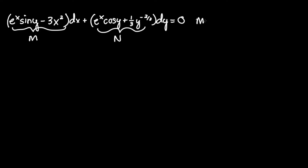So let's do that. M sub y, which is equivalent to ∂M/∂y, is the partial derivative of this term. In the eyes of y, e to the x is just a constant. The derivative of sine y is cosine y with coefficient e to the x, so we write e to the x times cosine y. The negative 3x squared has no y term, so the derivative of that is just zero.